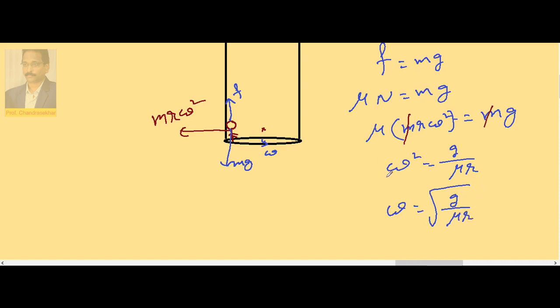So this is the minimum angular velocity with which the drum has to rotate. Otherwise the normal reaction decreases, friction decreases, and the person will fall down. So this is the minimum angular velocity required for the person.